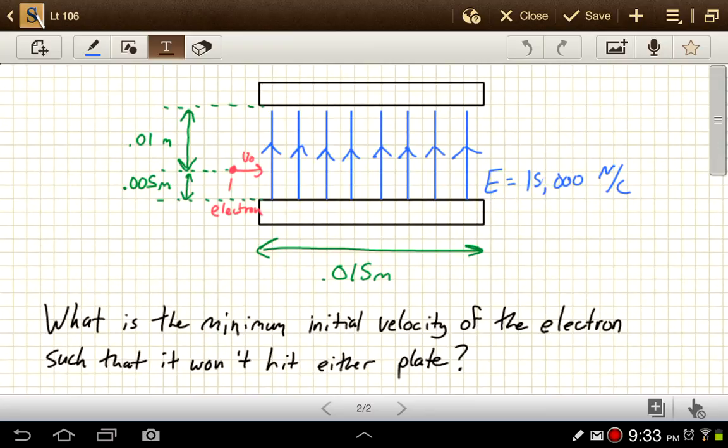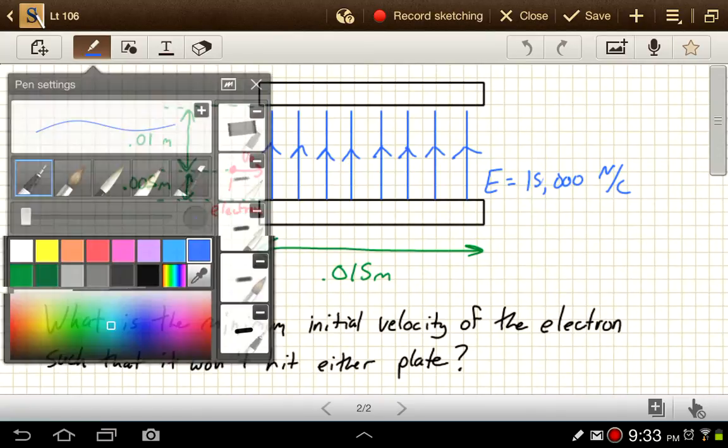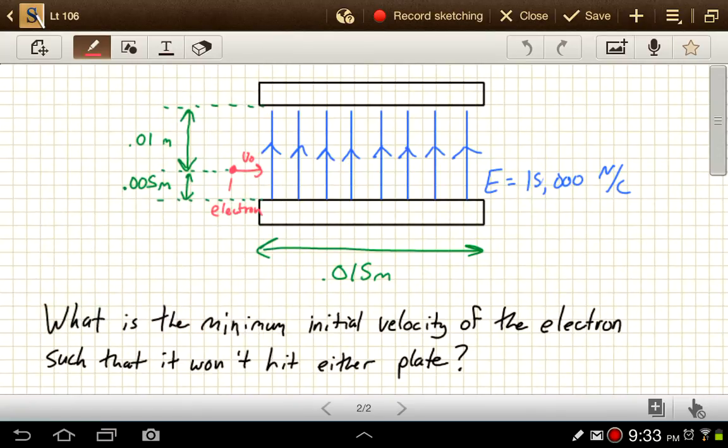First off, we need to think about which edge is it that we're worried about. Well, if we have an electron, electrons are negatively charged. And so the force on an electron would be opposite the direction of the electric field.